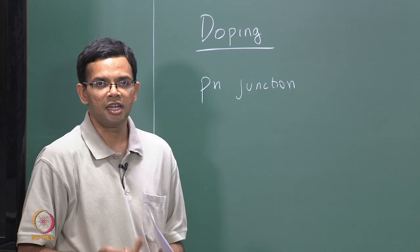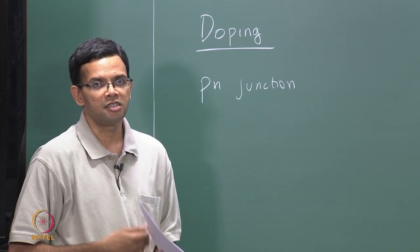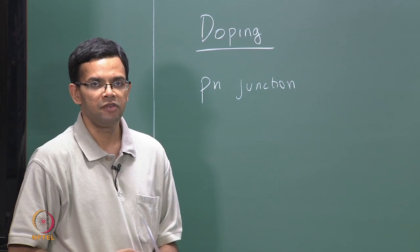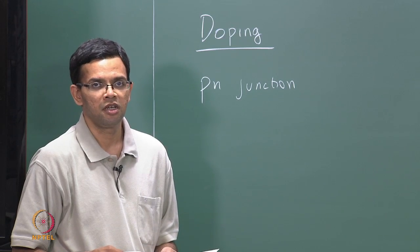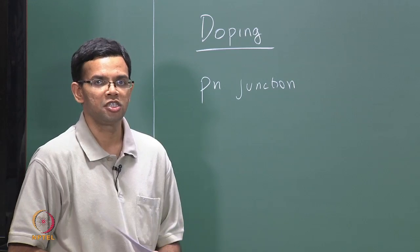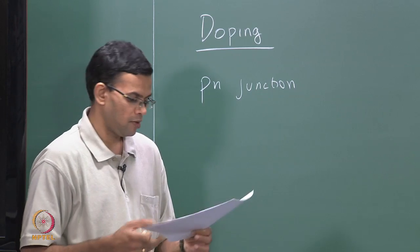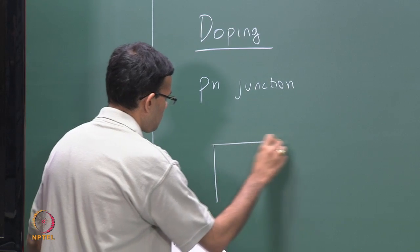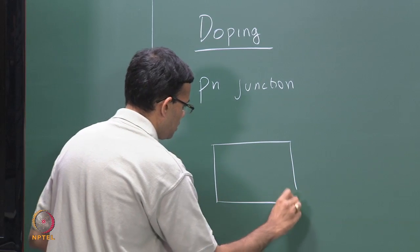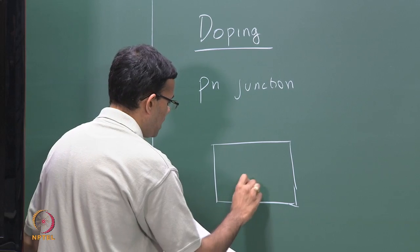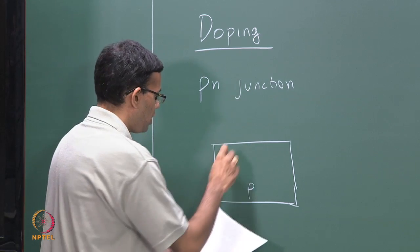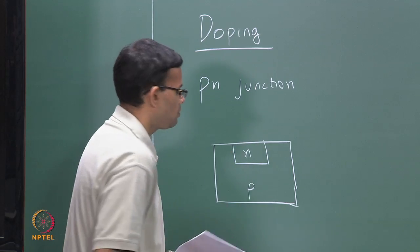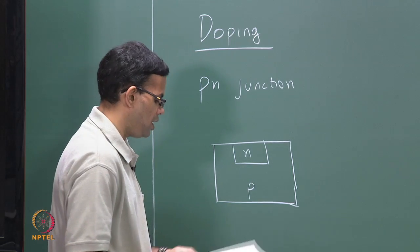The materials can be the same — in that case this will be a homo junction — or the materials can be different, in which case you have a hetero junction. We will be mostly focusing on homo junctions when we talk about doping. If you think about a simple p-n junction, you can start with a p-type material and then dope a specific area to be n-type, giving you a p-n junction.